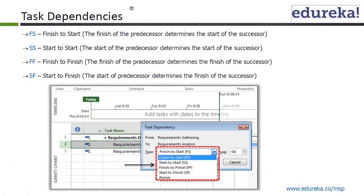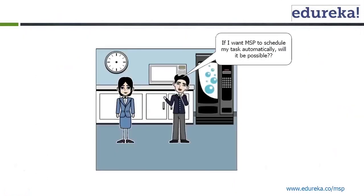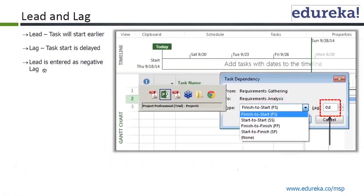We have already seen task dependencies and we have created a blank project. Lead means a task will start earlier; lag means the task start is delayed. Lead is entered as a negative number. Let's see with an example — let's create a lead in here.